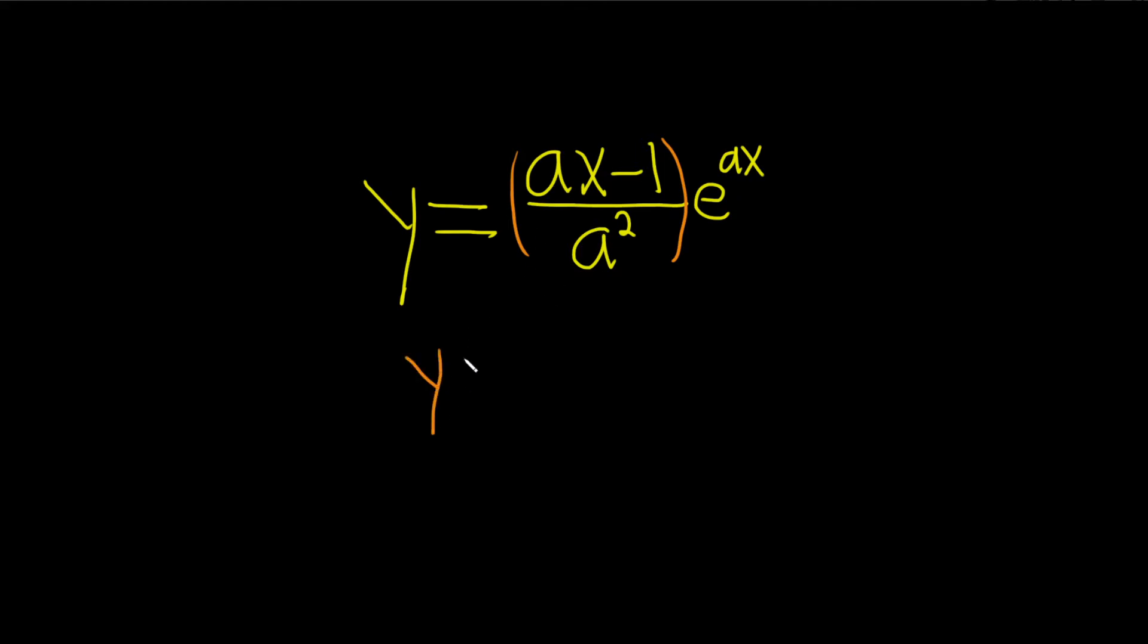So we can write this as y equals ax over a squared like this, and then minus 1 over a squared. We can break it up just to make it look a little bit better.